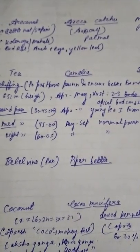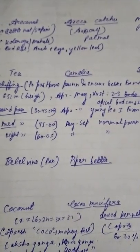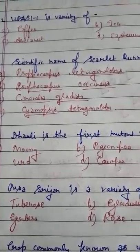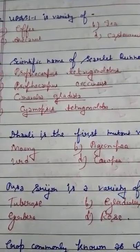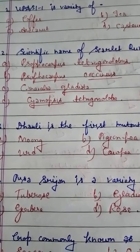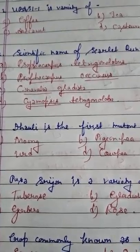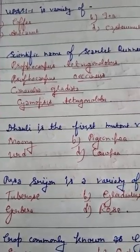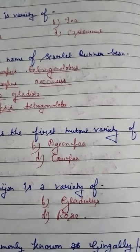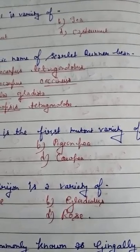Question number 2: Scientific name of Scarlet runner bean — option A Psophocarpus tetragonalobus, option B Psophocarpus coccineus, option C Canavalia gladiata, option D Cyamopsis tetragonoloba. You have to tell what is the scientific name of Scarlet runner bean.